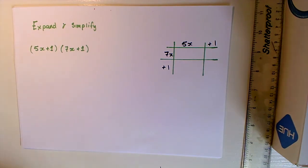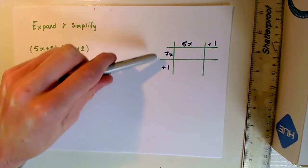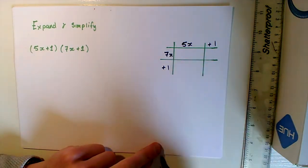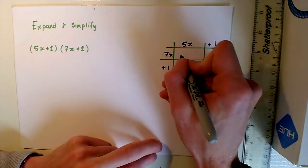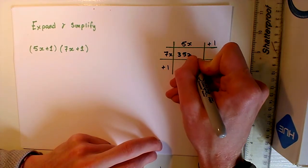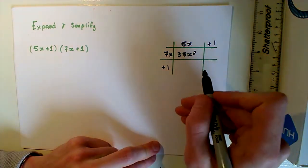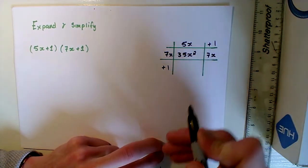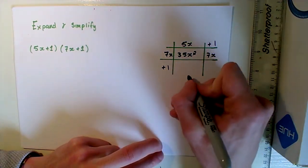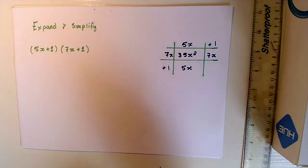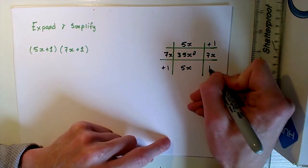In order to solve this, we need to make sure that we multiply each element of the vertical column by each element of the horizontal column. Let's start. We have 7X times 5X, well that will give me 35X squared. We have 7X times 1, which is just 7X. We have 1 times 5X, which is just 5X, and then we have 1 times 1. So 1 by 1 is 1.